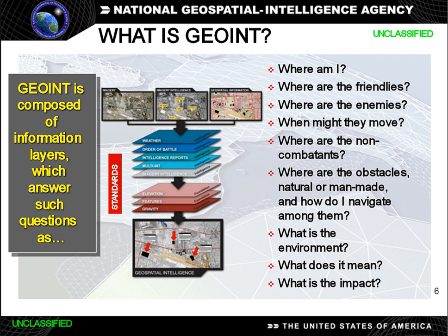The terms data, information, knowledge, and wisdom are difficult to define but cannot be used interchangeably. Generally, geospatial intelligence can be more readily defined as data, information, and knowledge gathered about entities that can be referenced to a particular location on, above, or below the Earth's surface. The intelligence gathering method can include imagery, signals, measurements and signatures, and human sources — i.e., IMINT, SIGINT, MASINT, and HUMINT — as long as a geolocation can be associated with the intelligence.